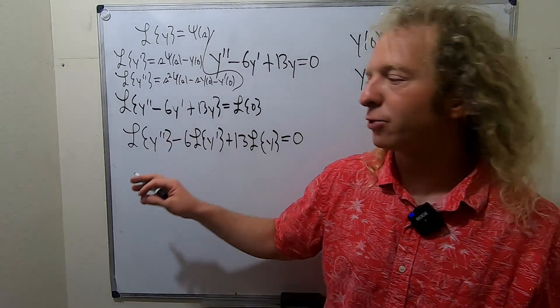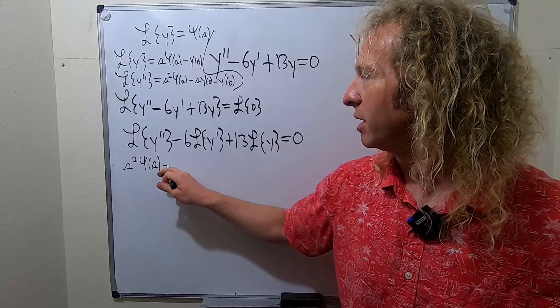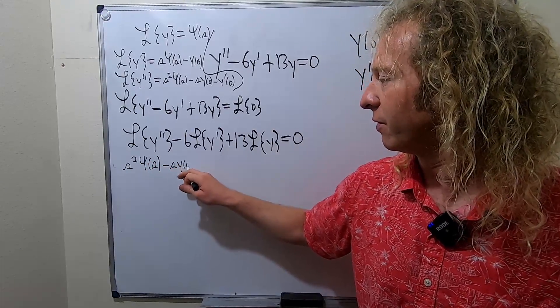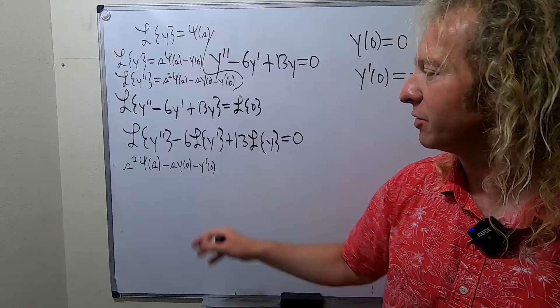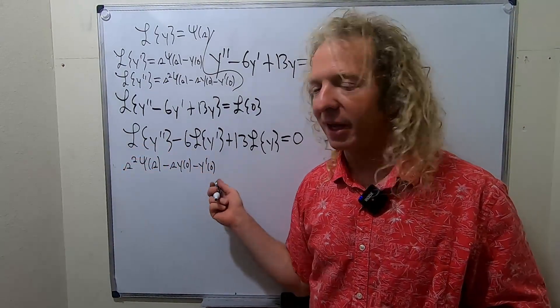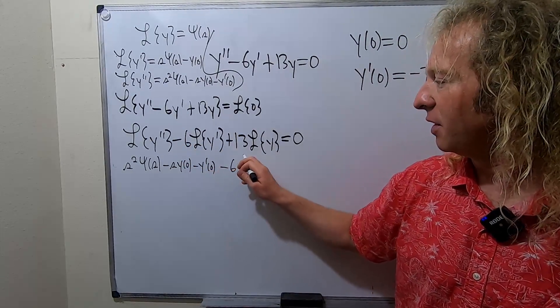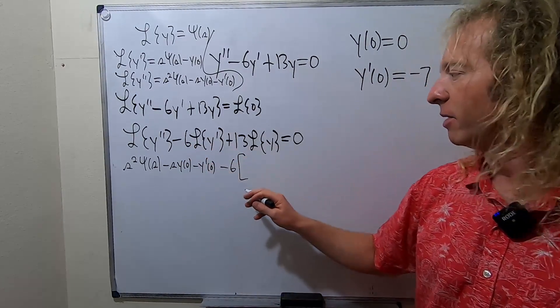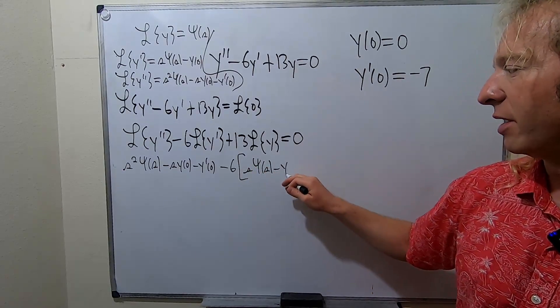So now let's use these formulas. This will be s squared pitchfork y of s minus s y of 0 minus y prime of 0. That's the first formula. So all I've written down so far is just this piece here. So the Laplace of y double prime minus 6. And then we have this here, Laplace of y prime. So this one is s pitchfork y of s minus y of 0.